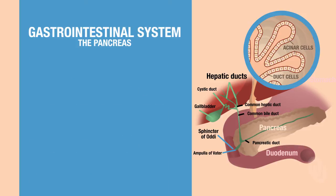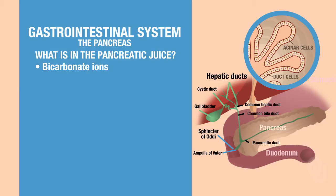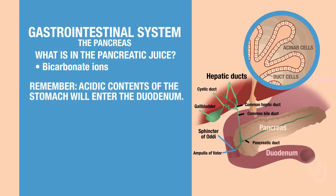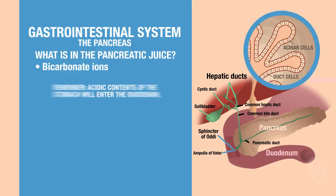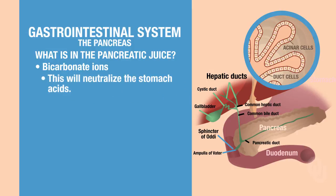The juice contains bicarbonate ions. We talked before about contents coming from the stomach being acidic and being dumped into the duodenum. The enzymes won't function in the duodenum in an acidic environment, so we have to have that bicarbonate in the duodenum to neutralize those acids.